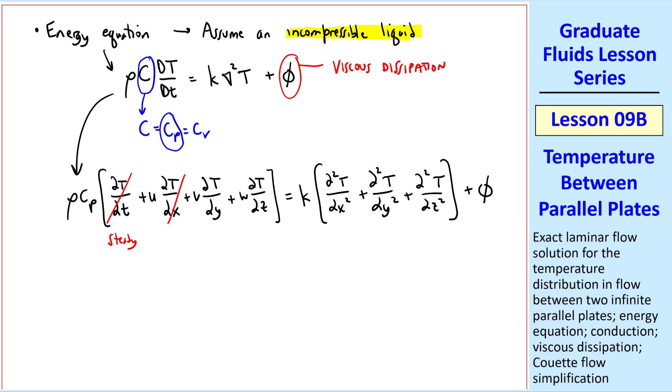This problem is steady. It's fully developed, which means that T is a function of y only. V equals zero by the continuity equation, which we discussed in the previous lesson. And this problem is 2D. On the right side, the flow is again fully developed and 2D.